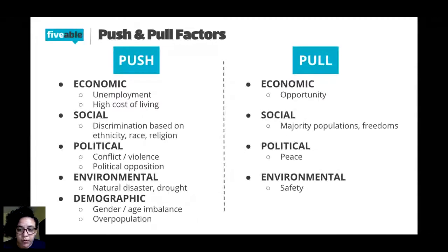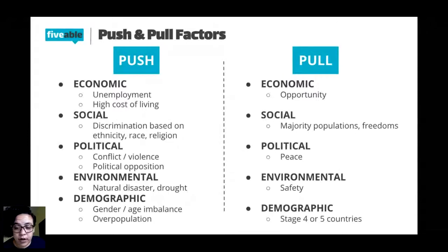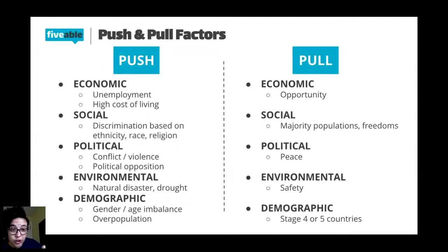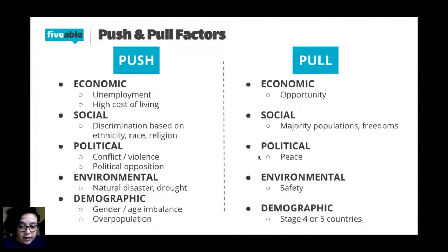One more demographic pull factor: if you live in an overpopulated, overcrowded place — typically a stage two or three country on the demographic transition model — it might be overcrowded, especially in cities. Therefore it's worth moving to a stage four or five country, which we tend to call first-world or developed countries, though we don't really use those terms anymore. That's the reason to move to such a place.